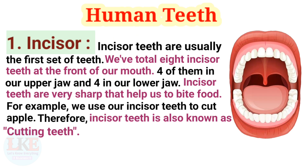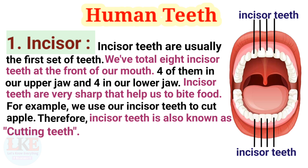First, incisors. Incisor teeth are usually the first set of teeth. We have a total of 8 incisor teeth at the front of our mouth — 4 in the upper jaw and 4 in the lower jaw. Incisor teeth are very sharp. The sharp edges help us to bite food. For example, we use our incisor teeth to cut an apple. Therefore, incisor teeth are also known as cutting teeth.